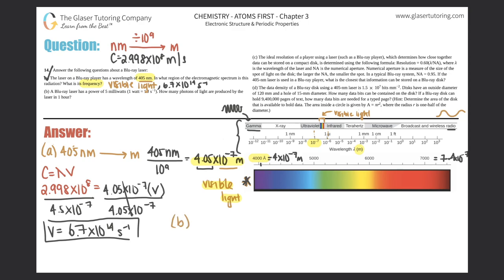Moving on to Part B: a blu-ray laser has a power of 5 milliwatts, and 1 watt equals 1 joule per second. How many photons of light are produced by this laser in 1 hour? I'll need to convert milliwatts and use the energy per photon formula to find the number of photons.